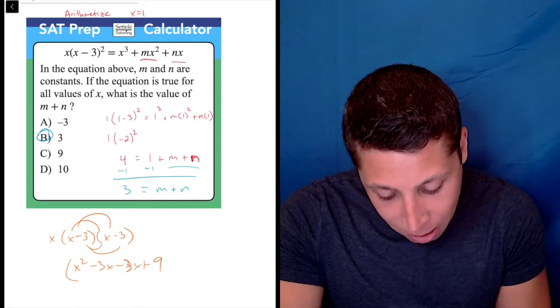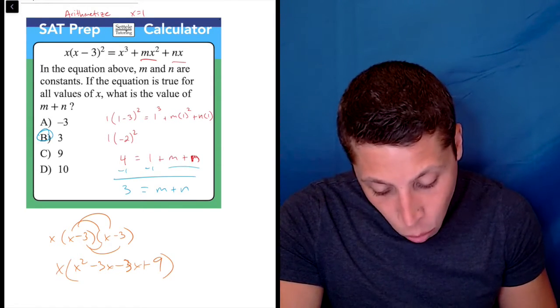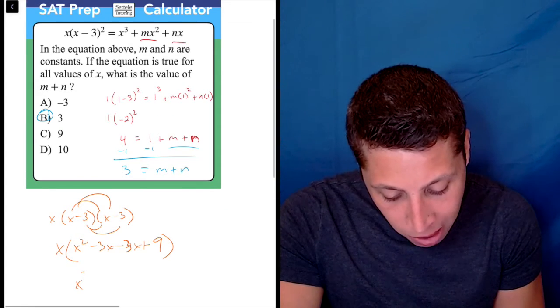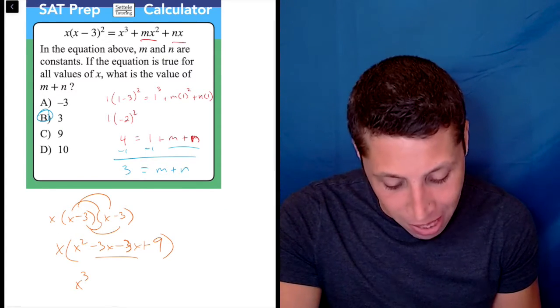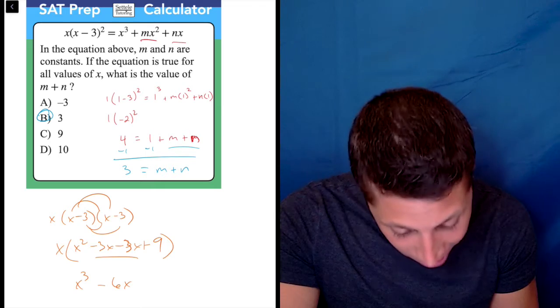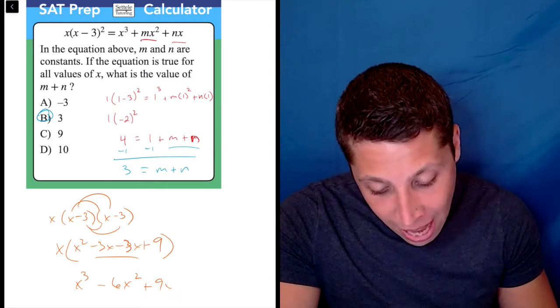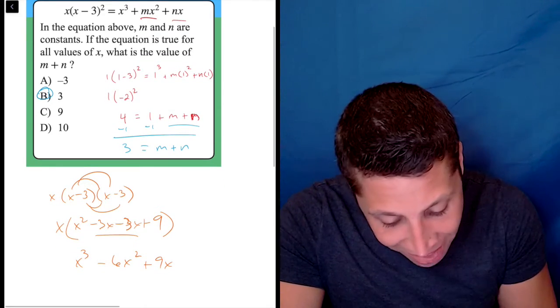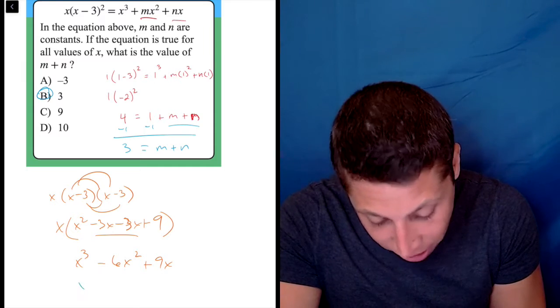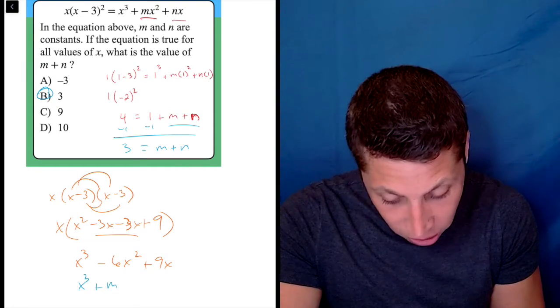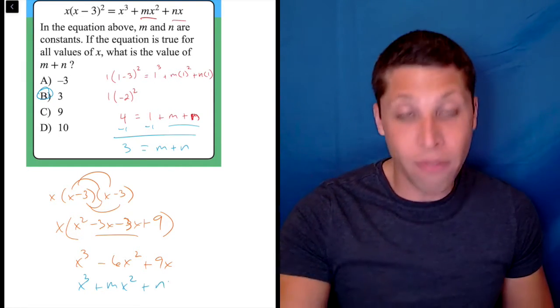And then all of that is multiplied by this outside x, so we're going to end up with x³. These will combine to -6x, so that'll be -6x² + 9x. And notice, that is going to line up with x³ + mx² + nx very nicely,